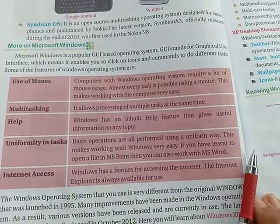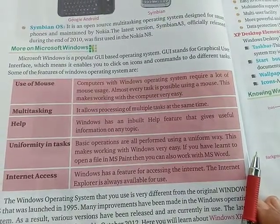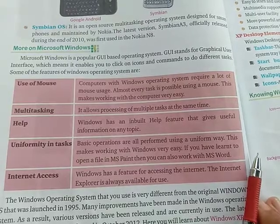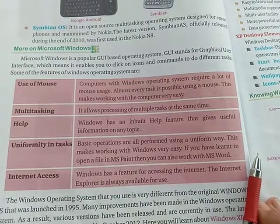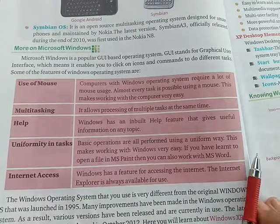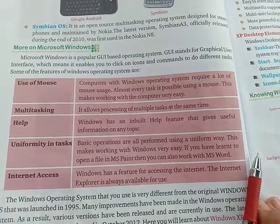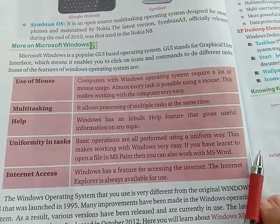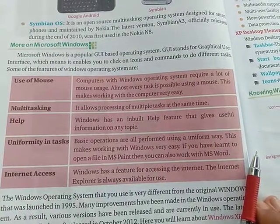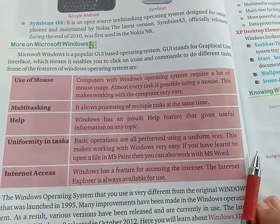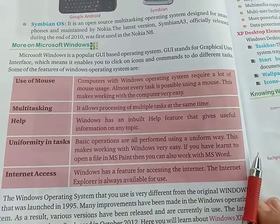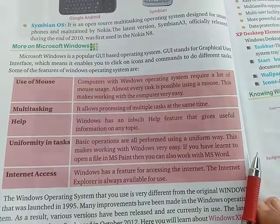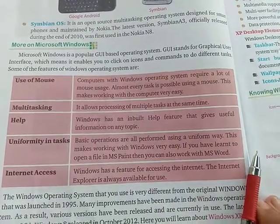Uniformity in tasks: basic operations are all performed in a uniform way. This makes working with Windows very easy. For example, if you have learned to open a file in MS Paint, then you can also work with MS Word the same way.